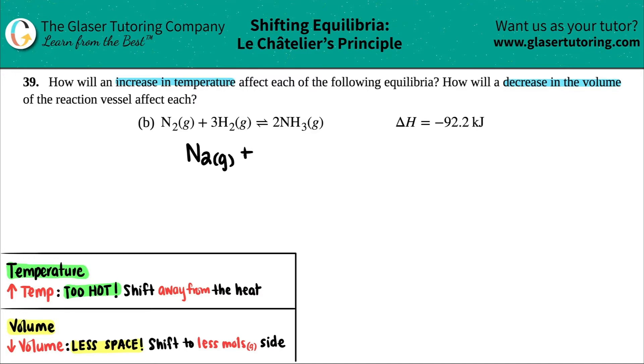So I got N2 gas plus 3H2 gas, and this comes to equilibrium with 2 NH3 gas.